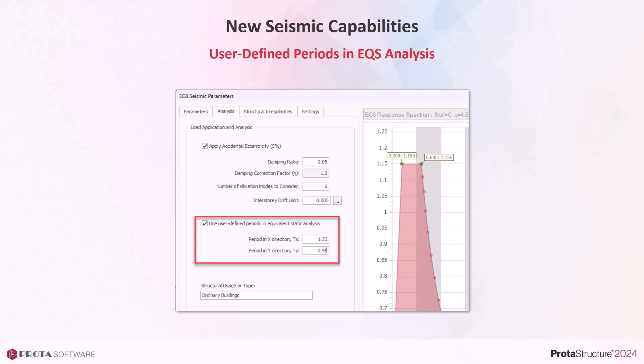ProtoStruxure automatically detects the modes of vibration by a 3D eigenvalue analysis. For equivalent static analysis, the dominant modes in each direction are automatically detected and used. However, seismic codes do not allow us to directly use these calculated values — they are always limited by empirical formulas depending on structural height and system. ProtoStruxure calculates and imposes those limitations and conducts the equivalent static analysis accordingly. With ProtoStruxure 2024, you can now completely bypass eigenvalue analysis results and impose your own period values to be used in equivalent static analysis. No limitations will be applied as an upper bound to these values.